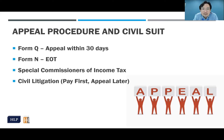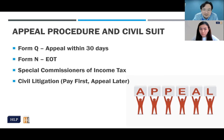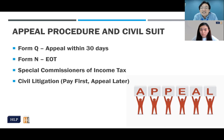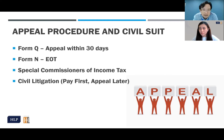The Director General has the discretion to allow or disallow the extension of time. If allowed, you can file your appeal beyond 30 days. If the DG refuses, the DG will forward the Form N application to the Special Commissioners of Income Tax, who will invite both the taxpayer and IRB to submit on the merits of the extension. The Special Commissioners' decision is final under the Income Tax Act.